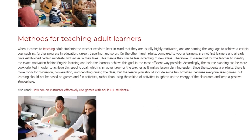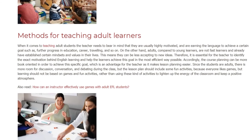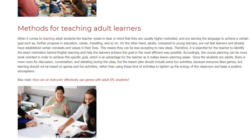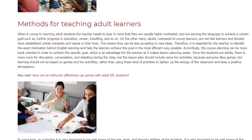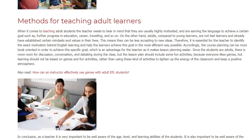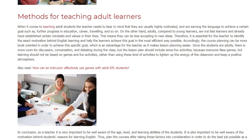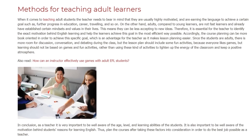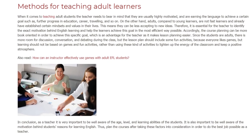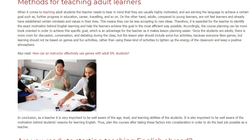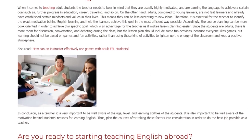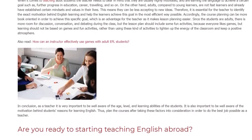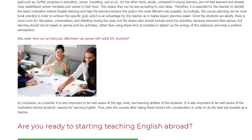It is essential for the teacher to identify the exact motivation behind a student's English learning and help them achieve their goal in the most efficient way possible. Course planning can therefore be more book-oriented, which is an advantage for the teacher as it makes lesson planning easier. Since the students are adults, there is more room for discussion, conversation, and debating, though the lesson plan should still include some fun activities to keep energy and a positive atmosphere in the classroom.